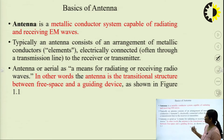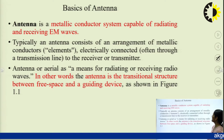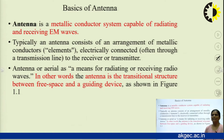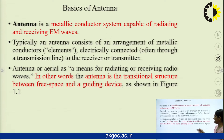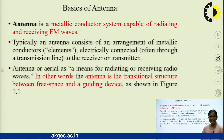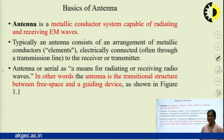What do you mean by antenna? It is a metallic conductor system capable of radiating and receiving electromagnetic waves. In other words, you can say an antenna is a transitional structure between free space and a guiding device.